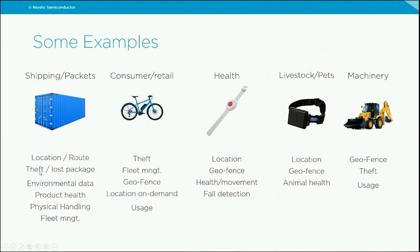You can discover if assets are stolen or lost, see what happened to them. With sensors in your asset tracker you can monitor environmental data, product health, and physical handling of the package, and optimize fleet management — for example, optimizing how you send products out to customers, when they are returned, and the product lifecycle. In consumer and retail, you can control that no one steals valuables like scooters or expensive bicycles.